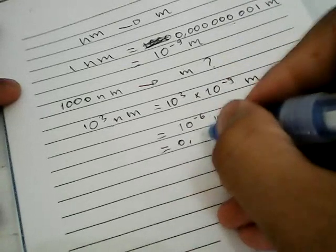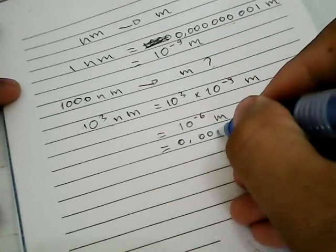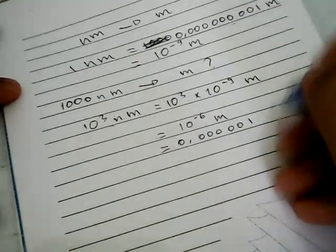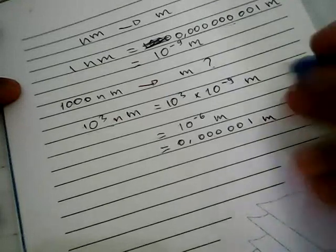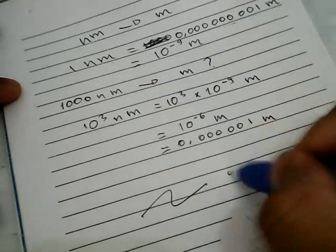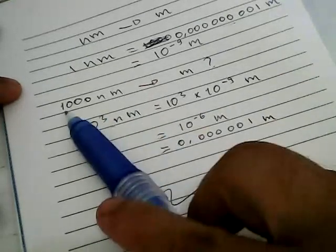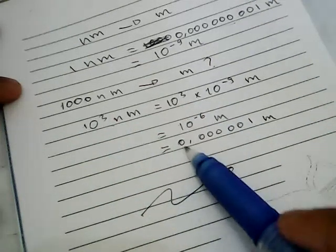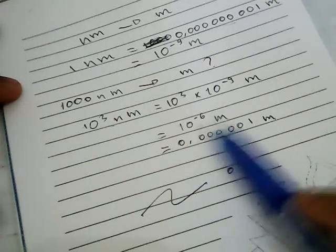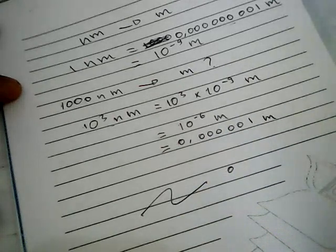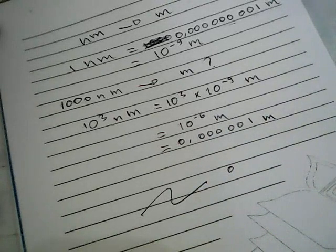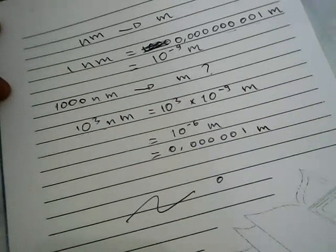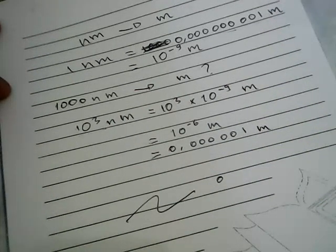The result is ten to the power of minus six meters. That is the answer to our problem: converting one thousand nanometers into meters equals ten to the power of minus six meters. Thank you for watching.